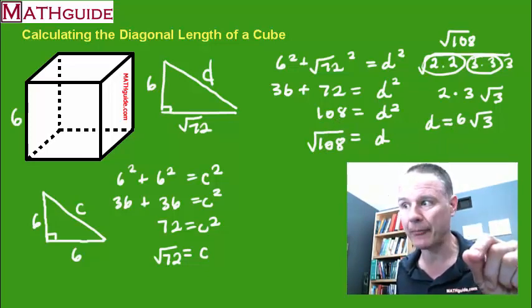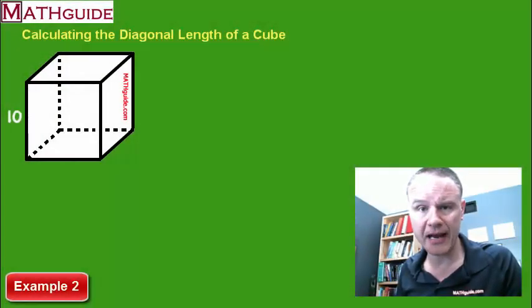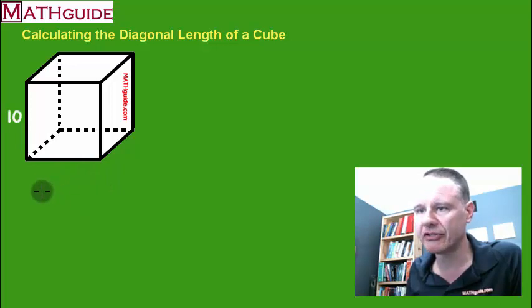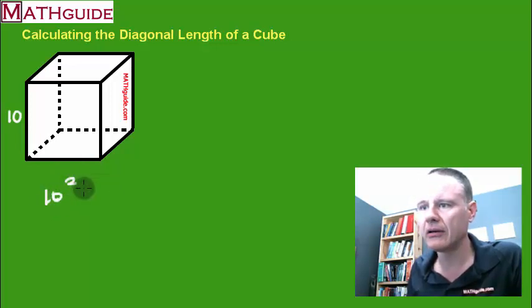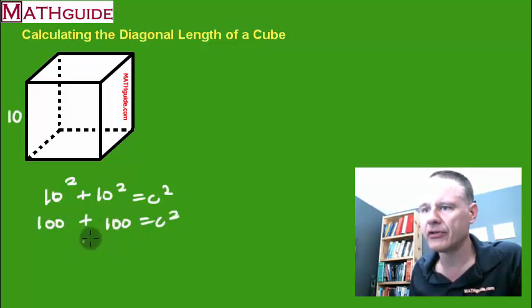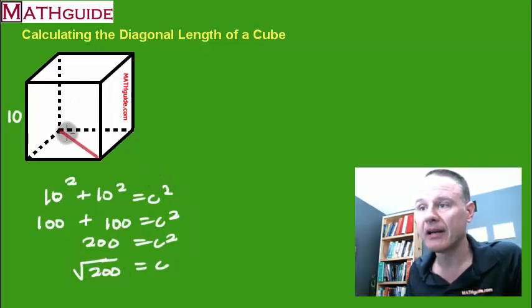Let's go through one more example quickly with less discussion and just calculation. For our second example, we have a cube with an edge length of 10 units. Using the Pythagorean theorem on the bottom face: 10 squared plus 10 squared gives 100 plus 100, which equals 200. Take the square root of both sides: the diagonal of the bottom face is the square root of 200. The vertical edge going straight up is also 10.